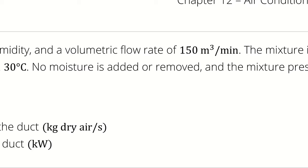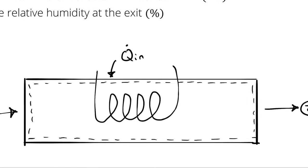The answer is yes — it is all of them. Because when we're modeling psychrometric behavior, we are using Dalton's law to approximate the behavior of air and water vapor mixed together. Dalton's law assumes that all of the species in the mixture occupy the same volume. Therefore, the volumetric flow rate of the atmospheric air, the dry air, and the water vapor are all 150 cubic meters per minute.